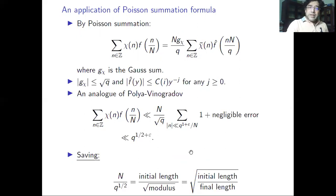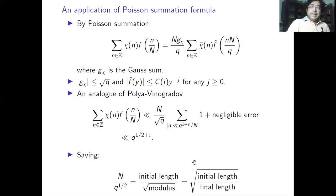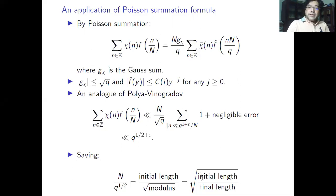When we go to higher-dimensional analogs of Poisson summation — the so-called Voronoi summation formula — the saving we get is still √(initial length) / √(final length), the same principle.